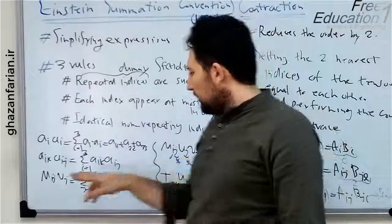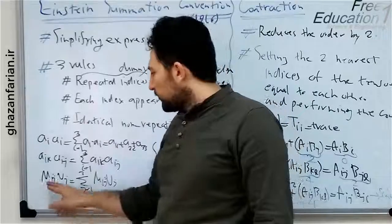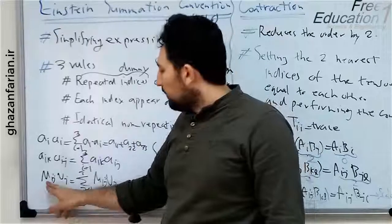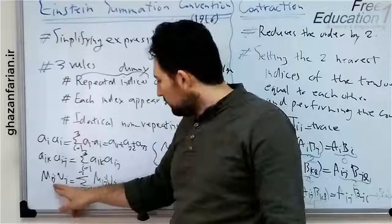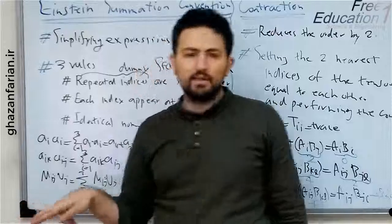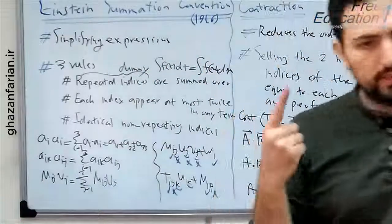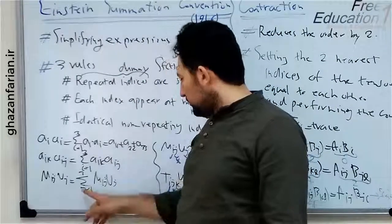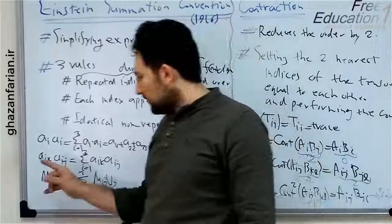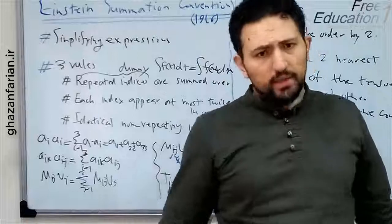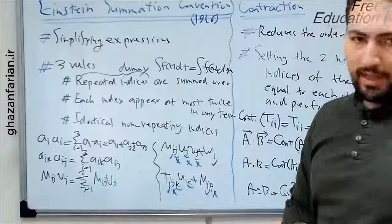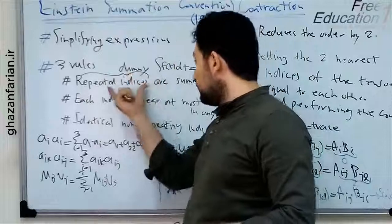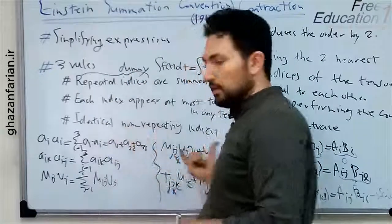The third example is m_ij times v_j. This is the product of a second-order tensor and a vector. You see one non-repeating index i, and one dummy or repeating index j. So the result of this product is a vector or a first-order tensor. We add the summation over j from one to three. This is the dot product of a vector and a tensor. You can easily expand any expression in tensor algebra based on the repeated and non-repeating index variables.